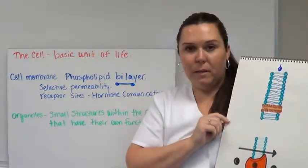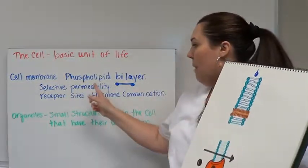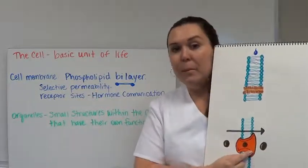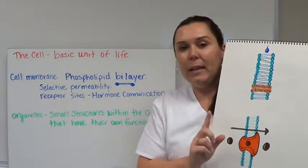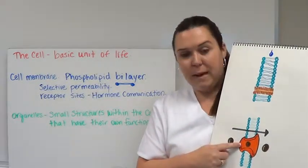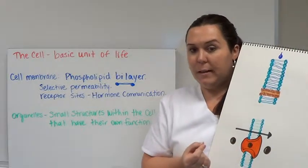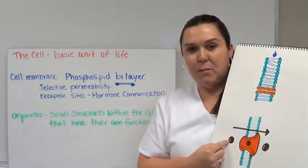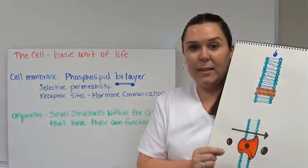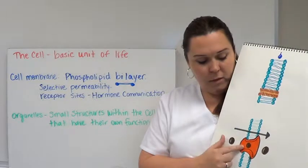This is what your cell membrane looks like. In the cell membrane we have receptor sites. Receptor sites are little openings like a lock and key that only allow certain substances to enter the cell. Here we have hormones because that's what we are going to be talking about in a later chapter.